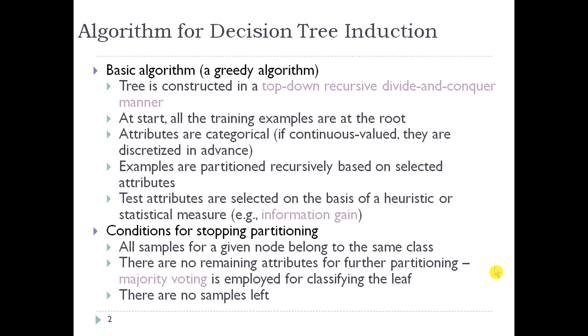Attributes are categorical. If continuous-valued, they are discretized in advance. Examples are partitioned recursively based on selected attributes.